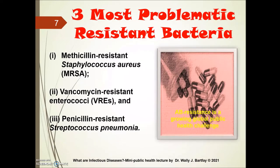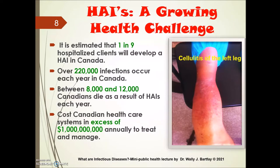Here are the three most problematic resistant bacteria we are currently dealing with on a global scale: Methicillin-resistant Staphylococcus aureus, abbreviated MRSA; vancomycin-resistant enterococci, or VRE; and penicillin-resistant Streptococcus pneumoniae. It is estimated that one in nine hospitalized clients in Canada will develop a hospital-acquired infection, with over 22,000 infections occurring each year, between 8,000 and 12,000 Canadians dying annually, and costs exceeding $1 billion to our healthcare system.